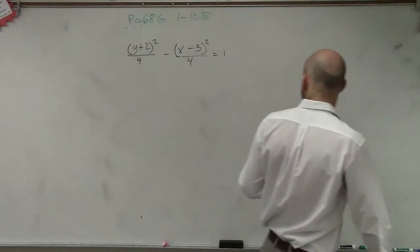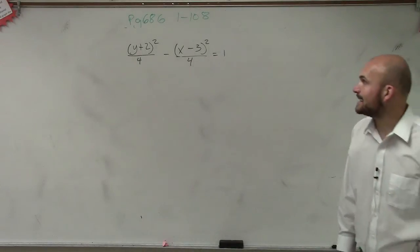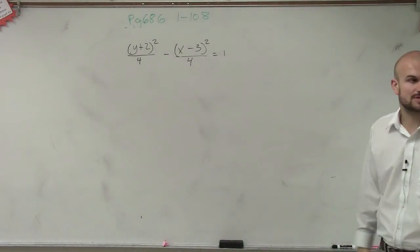What they're asking us to do is y plus 2 squared divided by 4 minus x minus 3 squared divided by 4 equals 1.